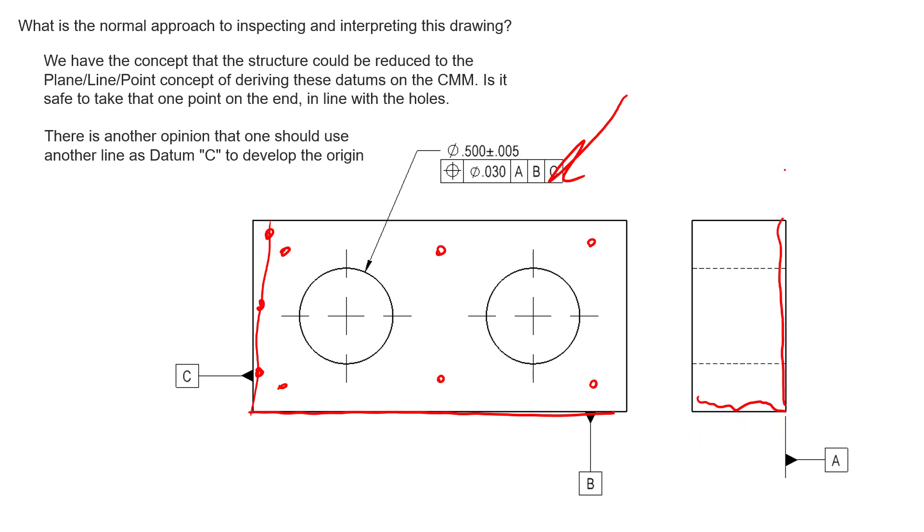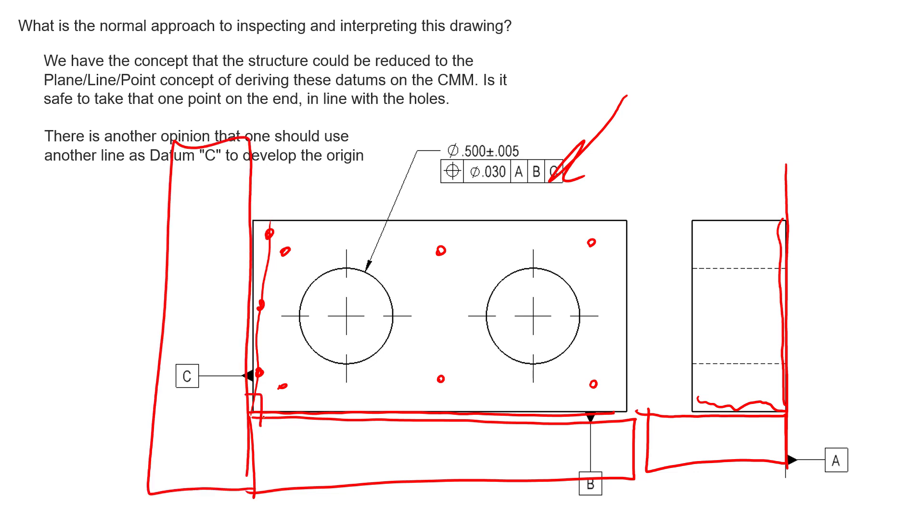We might have a one-two-three block or a granite surface, and then a one-two-three block here that stays perpendicular, and then a one-two-three block. This is the one we just drew. Then we have a one-two-three block here that establishes 90 degrees.